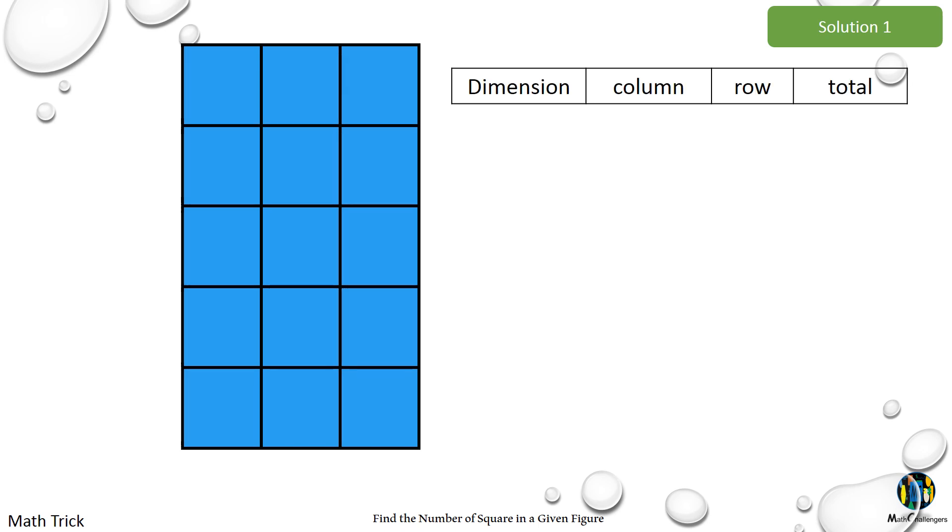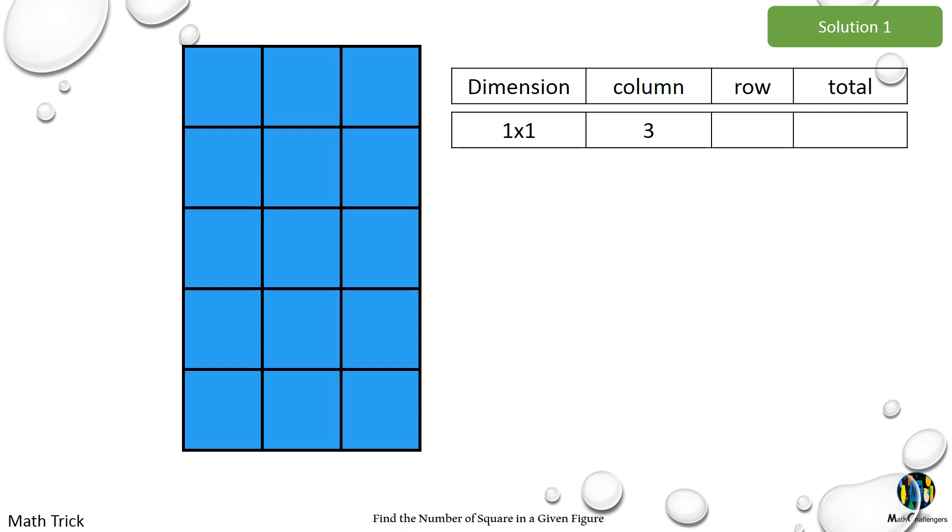Count the number of 1 by 1 squares vertically. Count the number of 1 by 1 squares horizontally. We have 3, 1 by 1 squares vertically and 5 horizontally. Get the product of 3 and 5, we have a total of 15. That is the total 1 by 1 squares in a 3 by 5 grid.